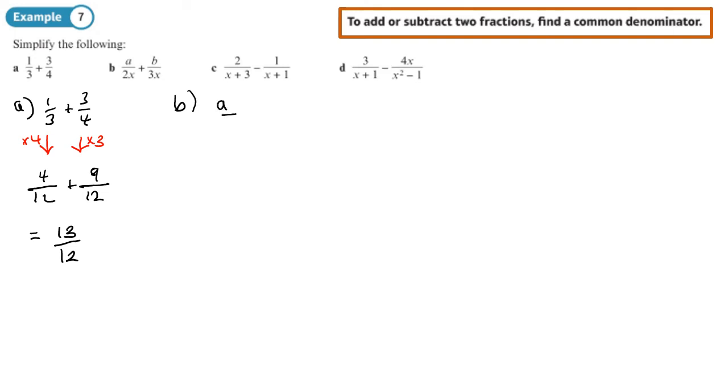So A over 2X plus B over 3X. Now, they have X as a common factor. So I only need to multiply the first one by 3 and the second one by 2. I don't need to times by X, 3X and 2X, because that's already a common factor. So I end up with 3A over 6X plus 2B over 6X, which will give me 3A plus 2B over 6X. You can't simplify that any further, so you'll leave it like that.